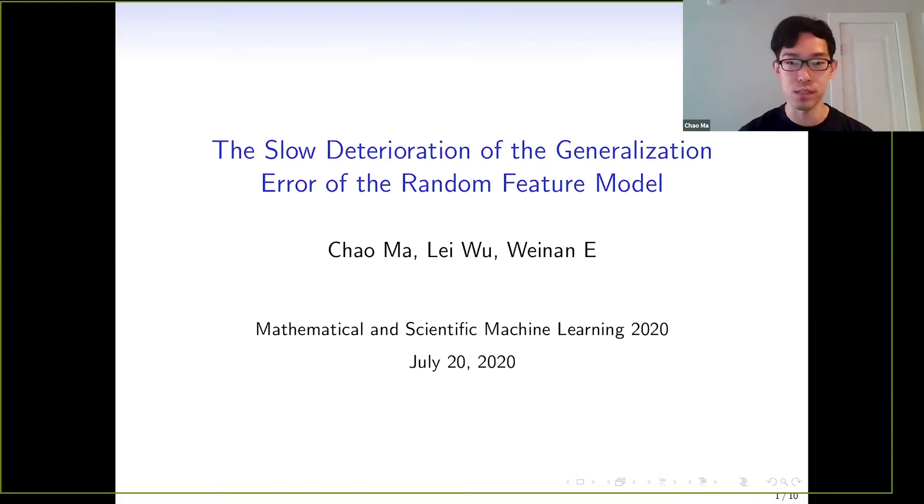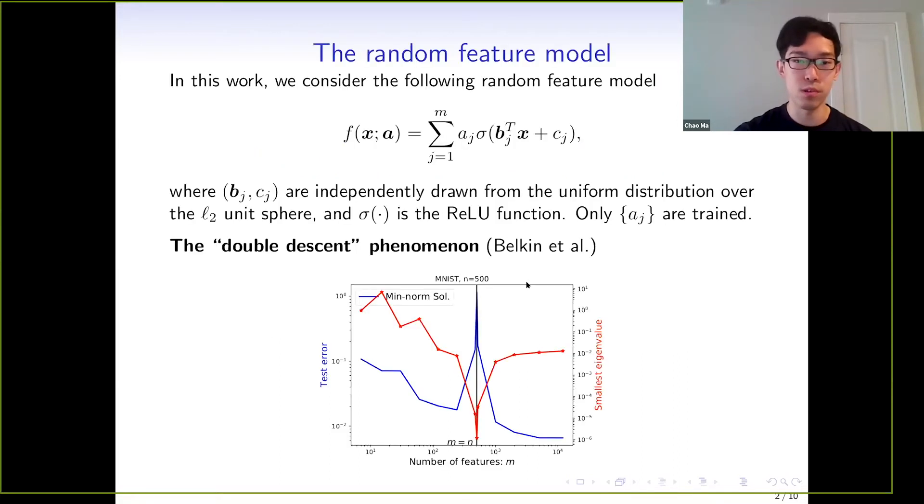This is joint work with Lei Wu and Professor Wina Oh. In this work, we focus on a specific kind of random feature model, which is shown here. It is a two-layer neural network with the first layer fixed, so we're only showing the second layer. We assume b_j and c_j are independently drawn from the uniform distribution over the unit sphere, and sigma is a ReLU function.